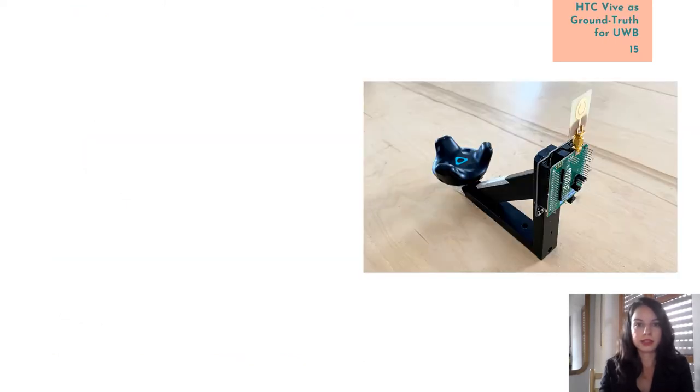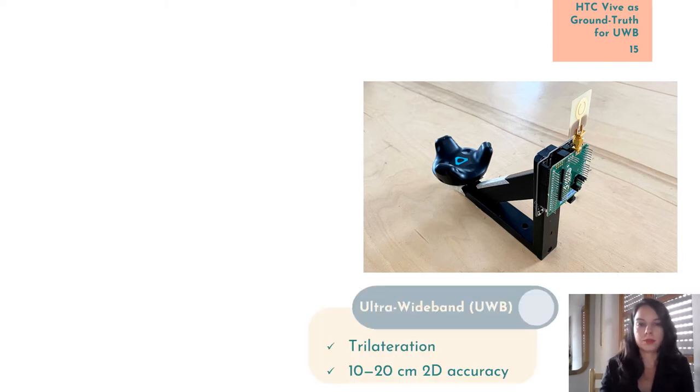The key idea is that the tracker will be co-located with the tag of our target localization system. In this paper, we chose to test the ground truth system on ultra-wideband localization, which uses trilateration to compute the location of the tag and has an average accuracy in a 2D space of 10 to 20 centimeters.